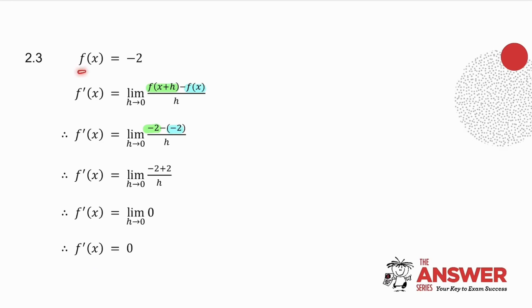Now let's think about this graph. What does the graph of f of x equals minus 2 look like? It's a horizontal line. And what is the gradient of a horizontal line? 0. What answer did I get when using first principles? 0.